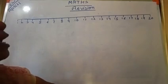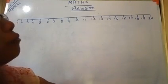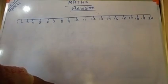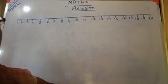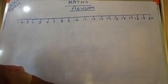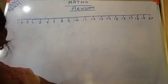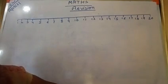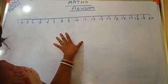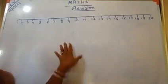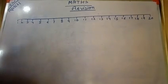When we are counting from 1 to 20, it is called forward counting. But when the counting is from 20 to 1, it is called backward counting.